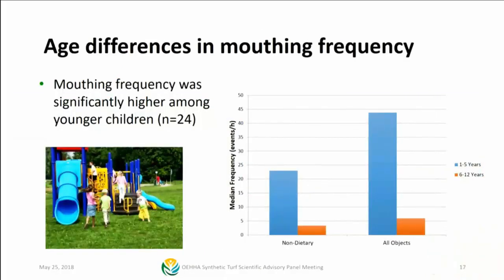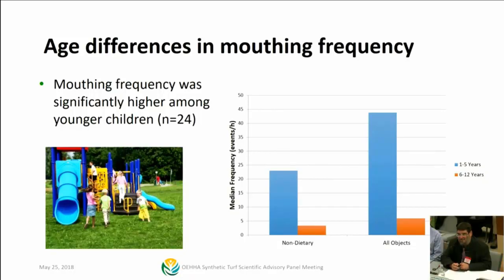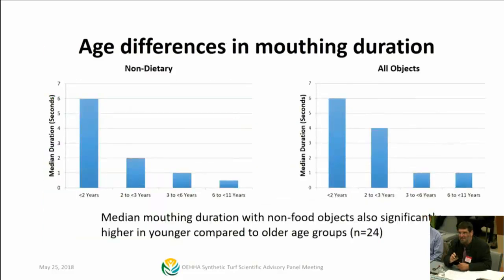We do find some differences by age, which we expect. Mouthing frequency is significantly higher in younger children — we know kids' hand-to-mouth behavior peaks between one to two years of age. Mouthing duration is also longer in younger kids, particularly for non-food objects. This is why we're concerned about young children and exposure and risk to potentially hazardous materials, and this information from the dataset helps confirm that — specific to California children in playground environments.